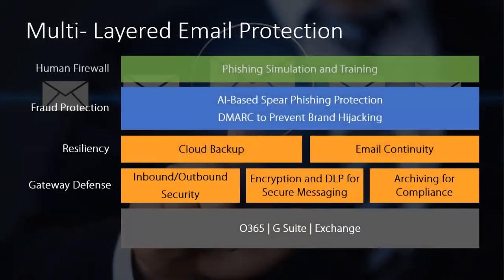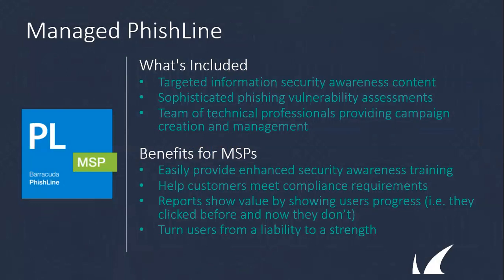During today's session, we're going to talk about a few layers of actual security posture your customer can have. Traditionally you start with just your mail tenant such as Office 365. Barracuda was founded as a leader in the email security space and was recently nominated by Forrester as one of the leaders in enterprise email security. We'll cover the inbound gateway-level defense from Barracuda's email security service, archiving, AI-based spear phishing prevention via Sentinel, and phishing simulation and training.